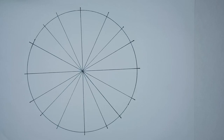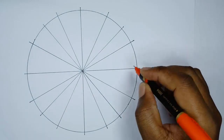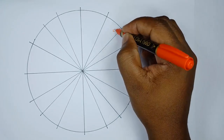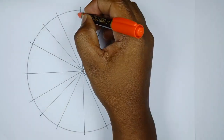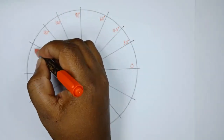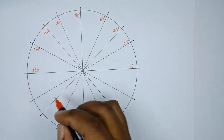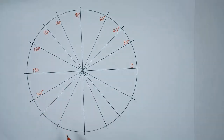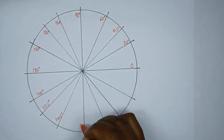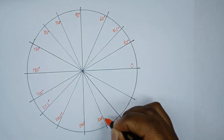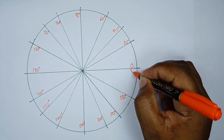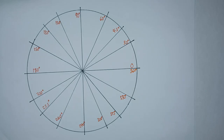The unit circle simply represents four quadrants of angles ranging from 0 to 360. So this is our 0 degrees, this is 30, this is 45, this is 60, this is 90, here we have 120, 135, this is 150, 180, this would be 210, this here should be 225, 240 degrees, this is 270, right here we have 300, here we have 315, here we have 330, and lastly this is also 360 degrees. So these are the angles that we have in degrees around the unit circle.